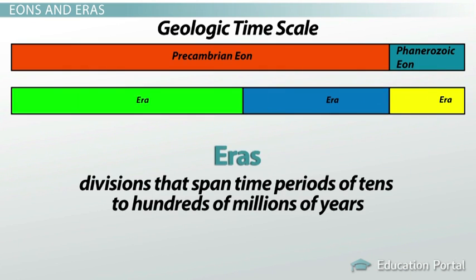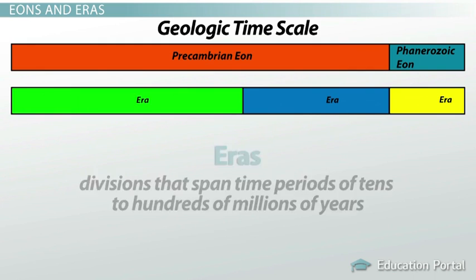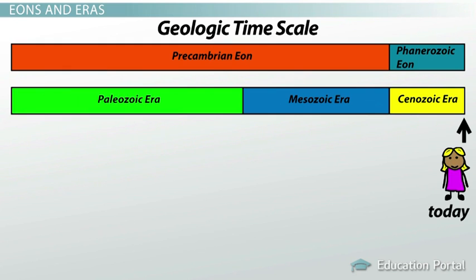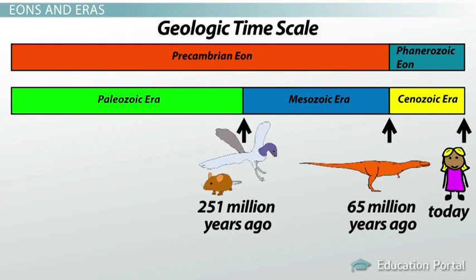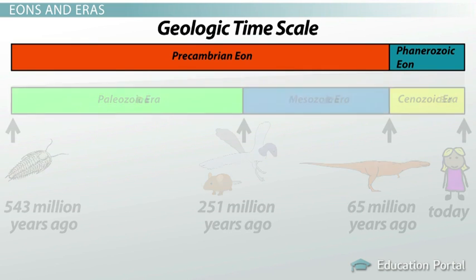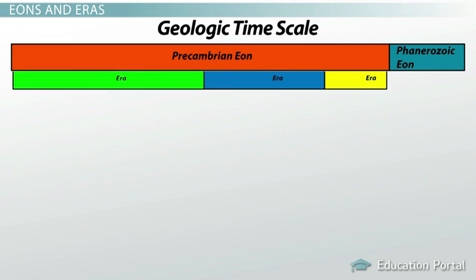Eons are made up of eras — divisions that span tens to hundreds of millions of years. The three major eras are the Paleozoic, the Mesozoic, and the Cenozoic. The Cenozoic Era is the one we are in today; it began 65 million years ago, right about the time that the dinosaurs went extinct. Keep in mind that these three eras are all grouped within the Phanerozoic Eon. The Precambrian Eon doesn't have any eras inside it — we don't have a lot of information about it, so we leave it as one big chunk in geologic history.